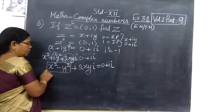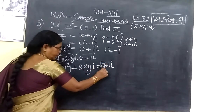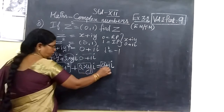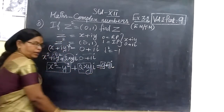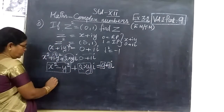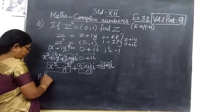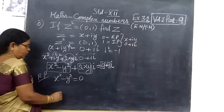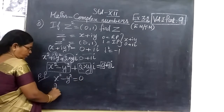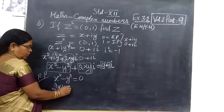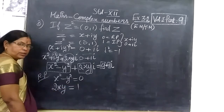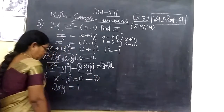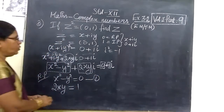Now we equate the real part and the imaginary part. In this real part, 0; and the imaginary part of 2xy equals 1. So when equating the real part, we get x² minus y² = 0. Then equating the imaginary part, 2xy = 1.